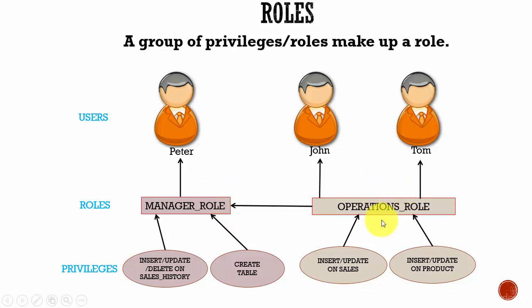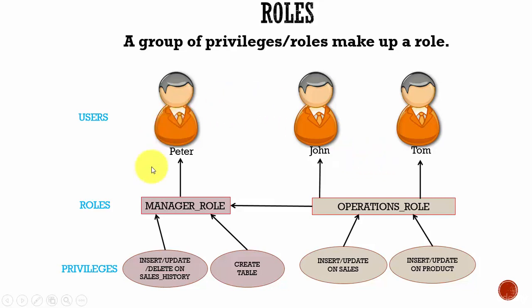In this way, you can say all the managers in the organization get the manager_role. When it comes to operations, they require insert and update on the sales table, and insert and update on the product table. You combine these privileges into a role called operations_role, and give this operations_role to all users working in the operations department. Depending upon the roles or responsibilities in your organization, you can create a role, combine a bunch of privileges, and assign that role to users.